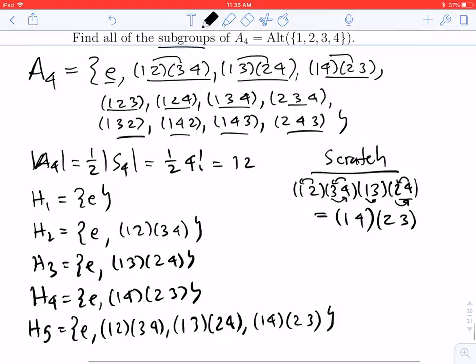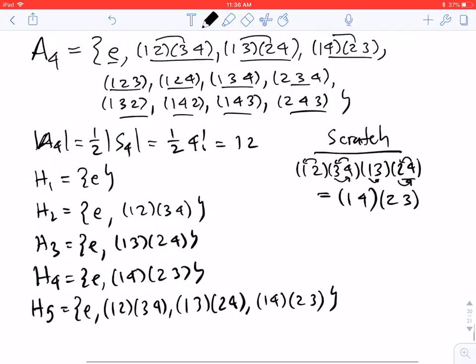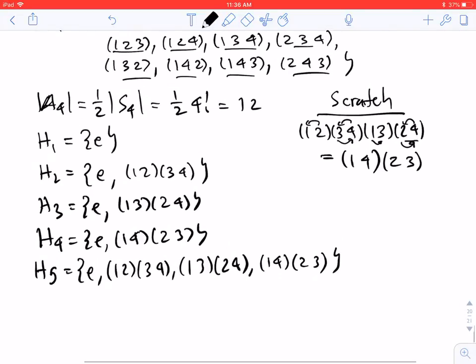Now, what if I add in an extra 3 cycle? So instead of putting in another double transposition, I'll put in a 3 cycle. So let's just do it systematically. We'll put in (1 2 3).